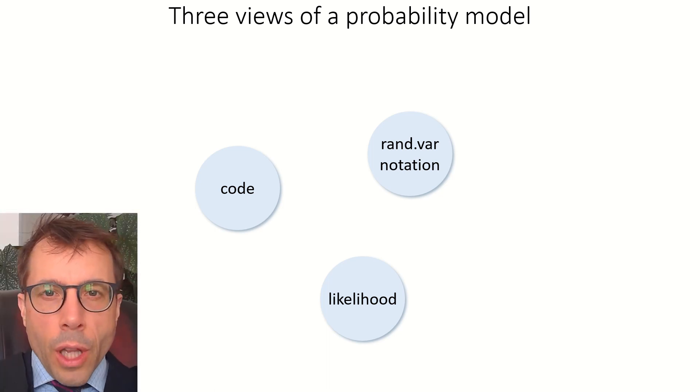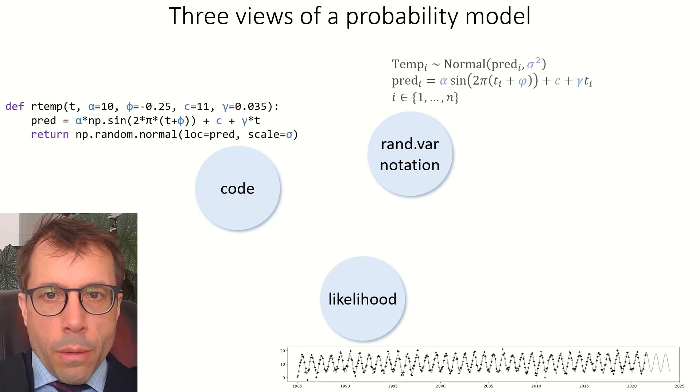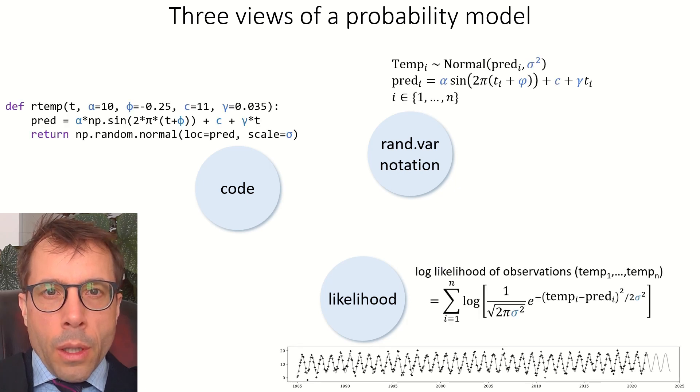Here's an example of climate model from the first video. You may like to stop and look back at the earlier videos to remind yourself what the code does and what the random variable notation means.